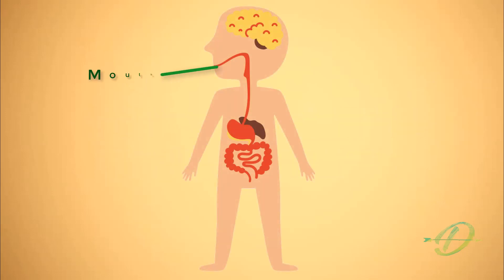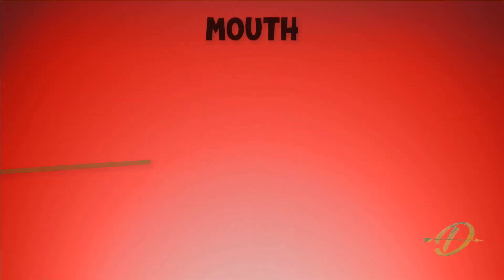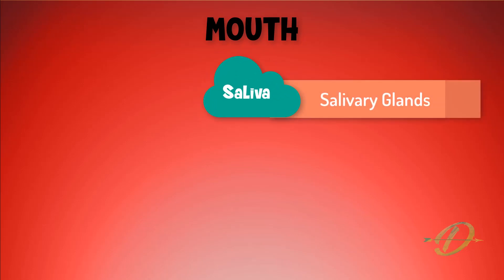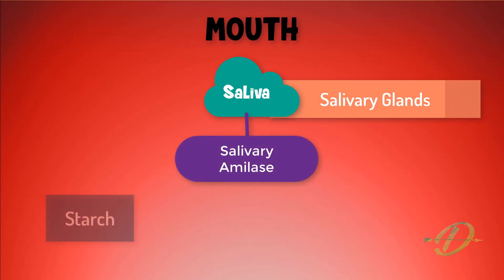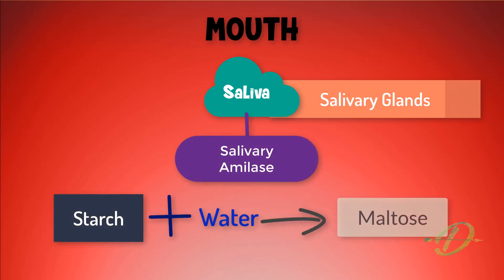First of all, the digestive process starts in the mouth. The presence of food in the mouth triggers the secretion of saliva by salivary glands. Saliva contains the enzyme salivary amylase, which hydrolyzes starch into maltose.